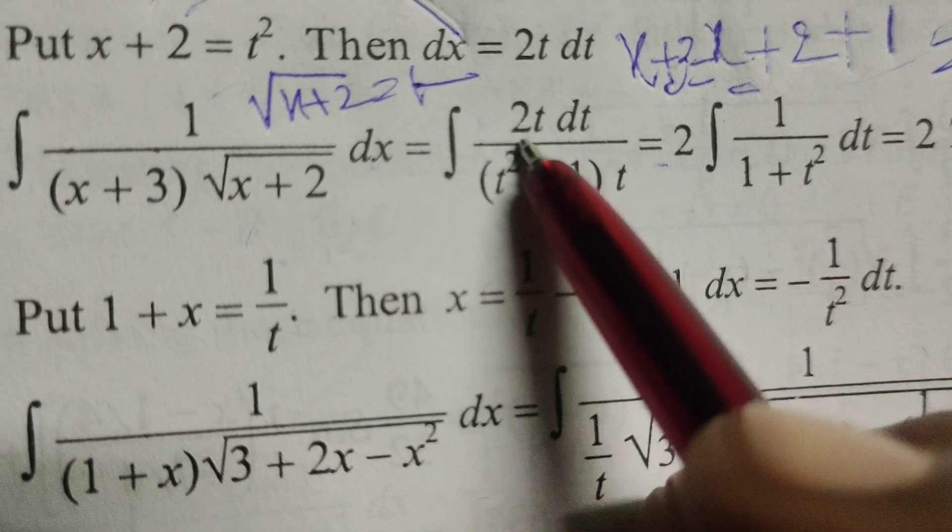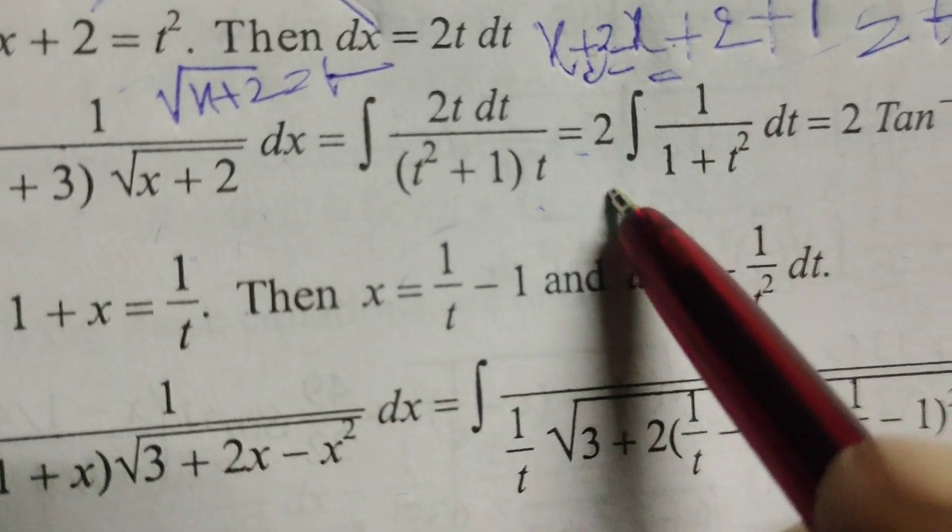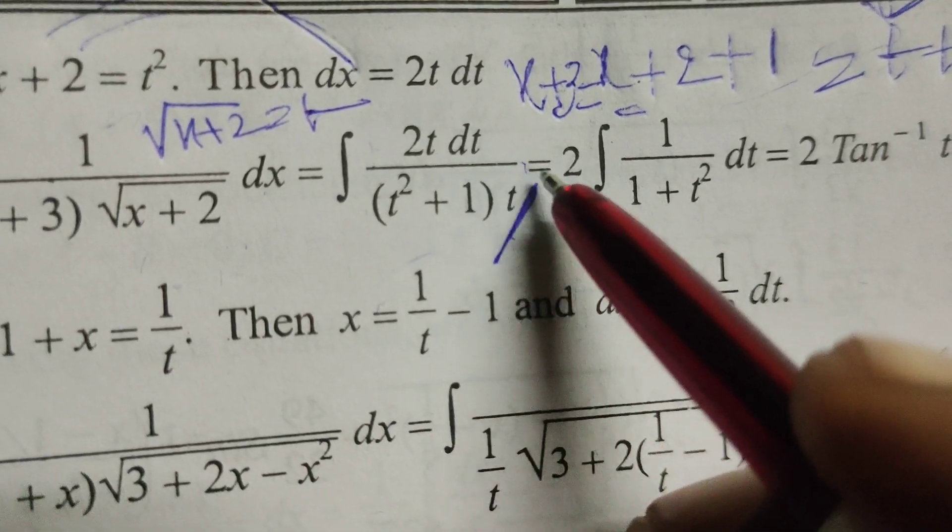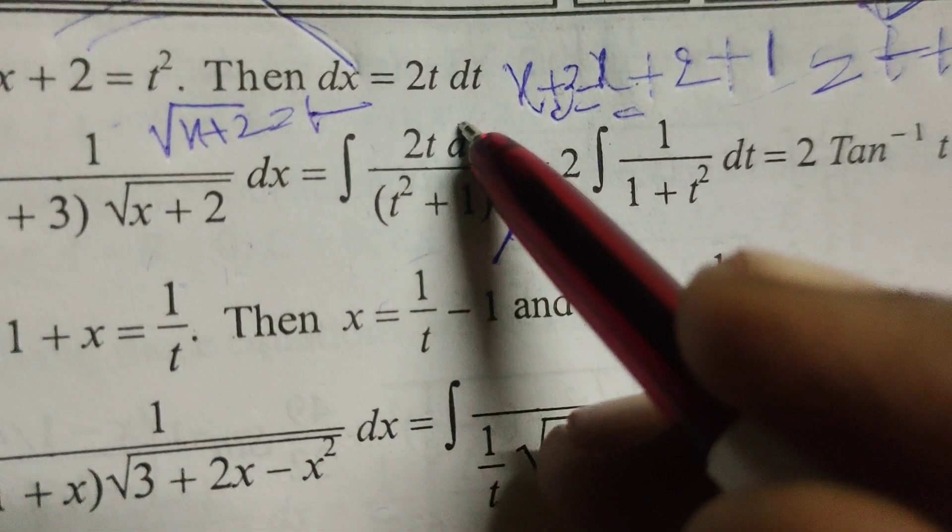2 is the constant. Write before integral. Then here t gets cancelled.